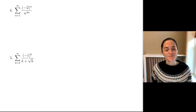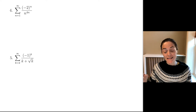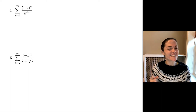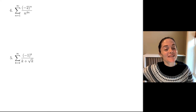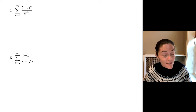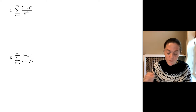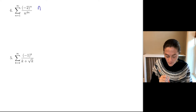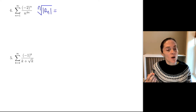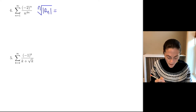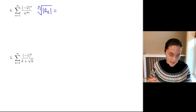Number four: this is definitely alternating because of the minus 2 to the n part. Root test, root test, root test — we see something to the n, and the root test can be used with a series of positive and negative terms. We take the n-th root of the absolute value of a_n. When I take the absolute value of these terms, the minus 2 just turns to a plus 2.